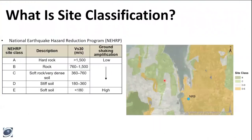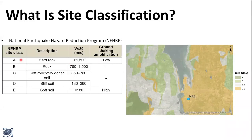So what is Site Class? Site Class is a classification schema developed by the National Earthquake Hazard Reduction Program, or NEHRP, that essentially attempts to classify soils based on their potential ground shaking amplification. It essentially breaks soils into classes A through E and also F, but F is special — we will discuss that in a little bit — with A being hard rock with the lowest amplification and E being soft soils with the highest amplification.